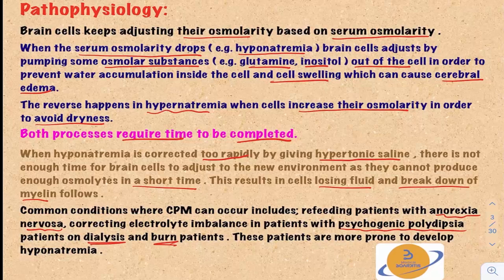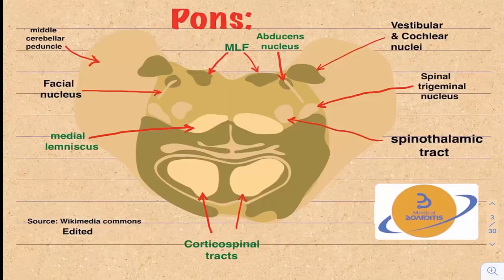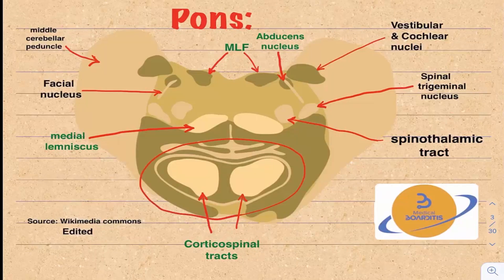These populations are more prone to develop hyponatremia because of their conditions, so when correcting the electrolyte imbalance in these patients, we need to be careful so as not to develop central pontine myelinolysis. This is a cross-section of the pons, and I just wanted to note the location of the corticospinal tracts at the central part of the pons.